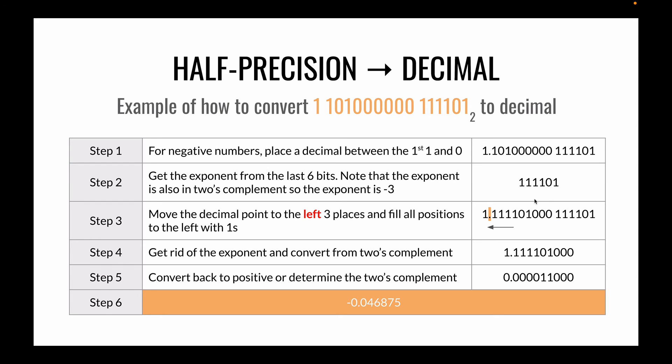Here's another tricky scenario where we have a negative number with a negative exponent. We need to figure out what the exponent is and that's negative 3. Instead of moving to the right we're going to move to the left. And remember when you have a negative exponent it usually means you're going to have a very small number. So we move the decimal place over to the left. Once we have that we can now convert it out of 2's complement to get our number which is going to be 0.046 etc. And once we have that number we know that it was a negative number. This is negative 0.046.